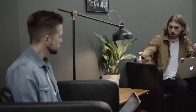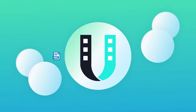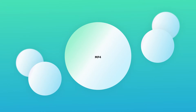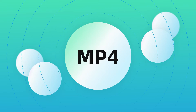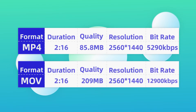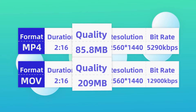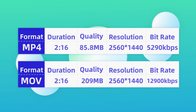For maximum shareability, just convert your MOV videos into MP4 format. It is the most widely accepted video format across the web. Besides, due to the high compression used in MP4, the resultant files will be smaller in size with almost all the original quality retained.